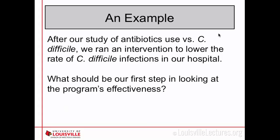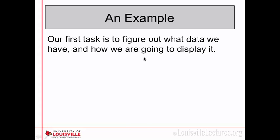So what would be the first step in looking at a program's effectiveness for lowering your infection rate? The performance improvement could be several different things — it could be hand hygiene, looking at how often people are washing their hands when they should. There are several different methods. Our first task is to figure out what data we have and how we're going to display it.